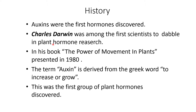History of auxin: Charles Darwin was among the first scientists to work in plant hormone research. In his book 'The Power of Movement,' he mentioned about plant hormone, presented in the year 1880. The term auxin was derived from the Greek word meaning 'to increase' or 'to grow.'